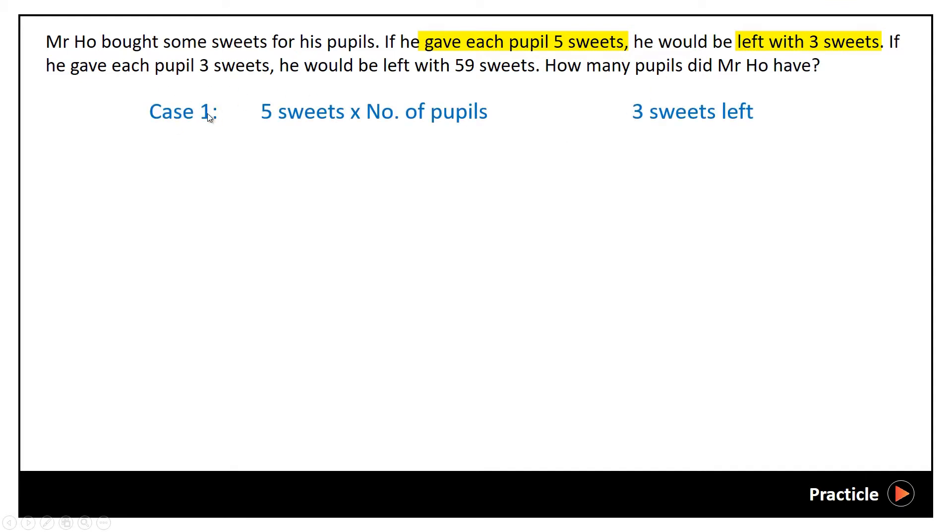So in other words, in the first case, the total number of sweets that Mr. Ho had would be 5 sweets multiplied by the number of pupils plus the 3 sweets that he was left with.